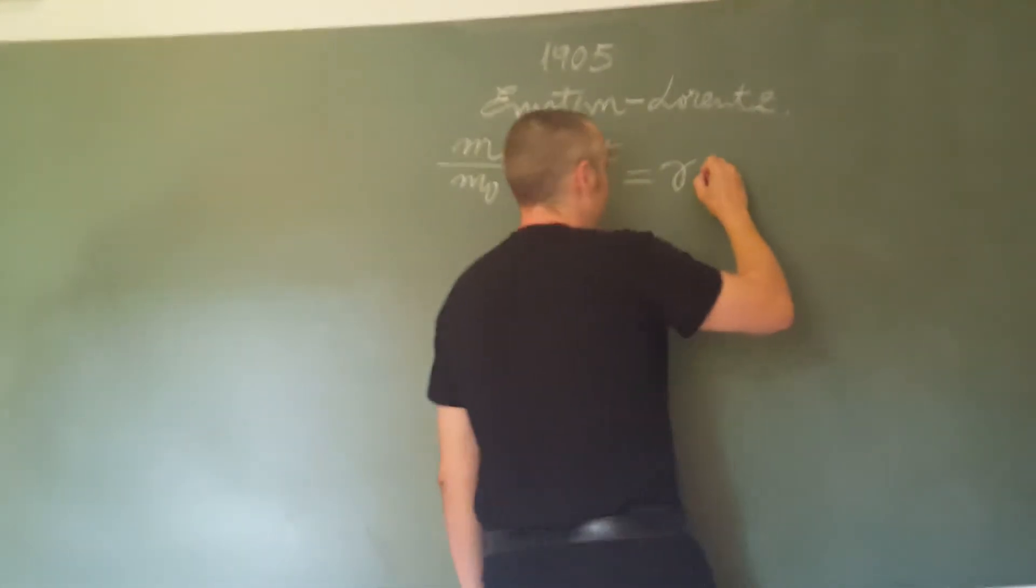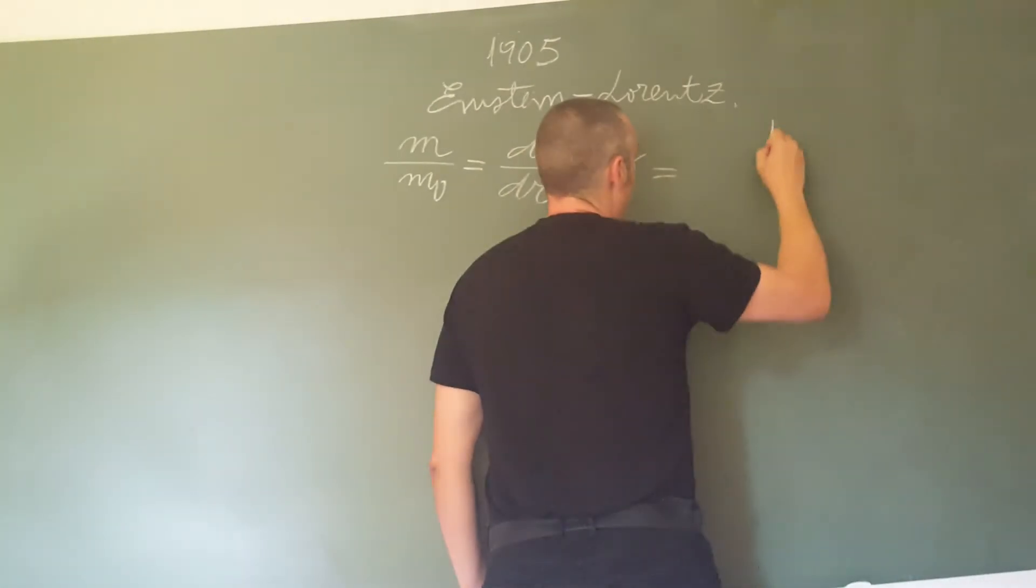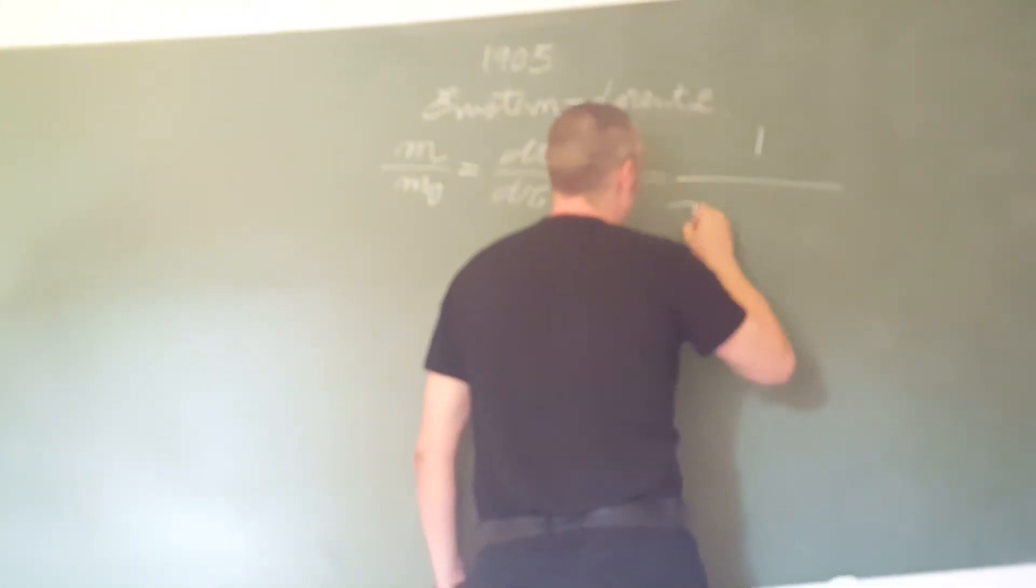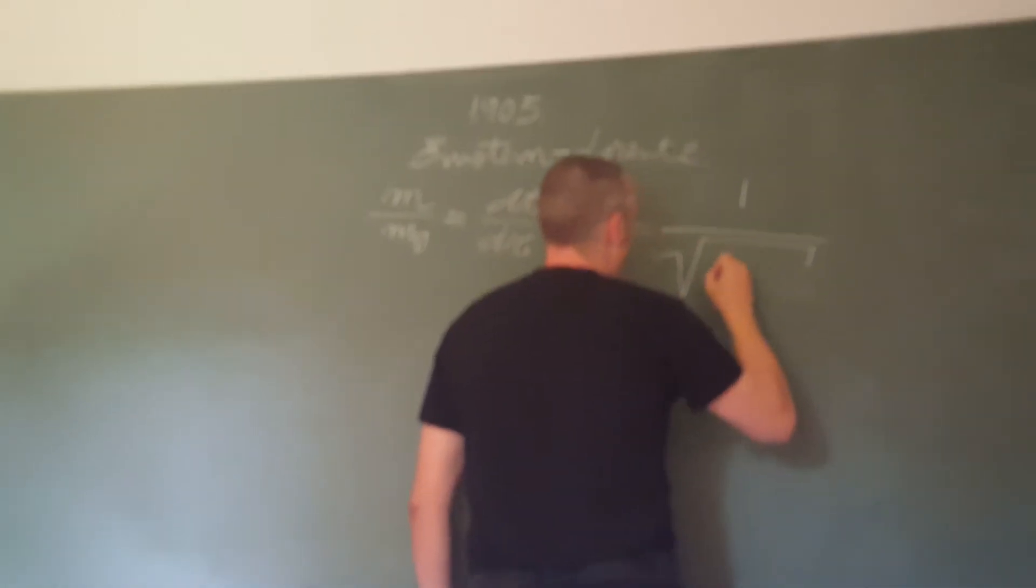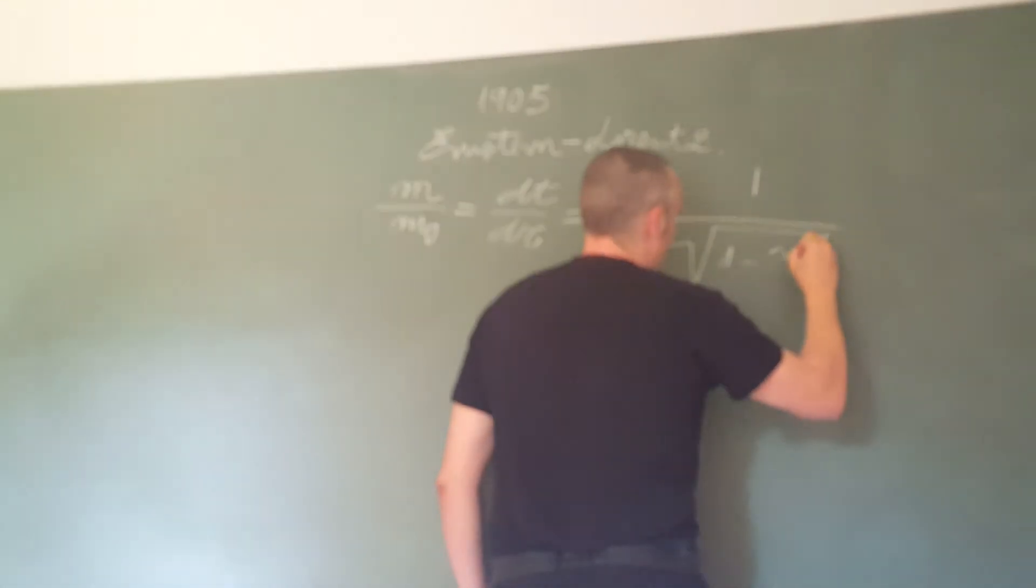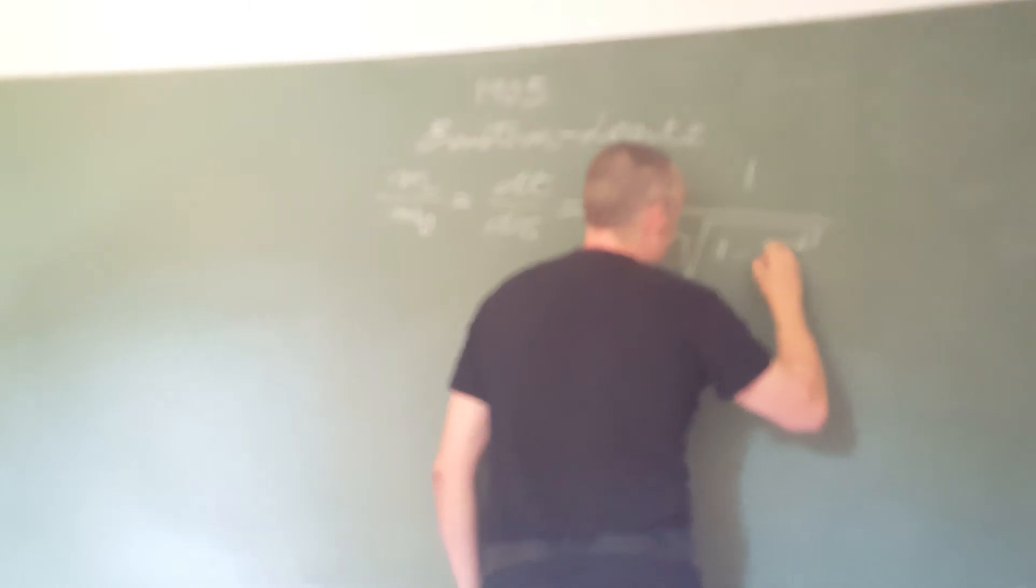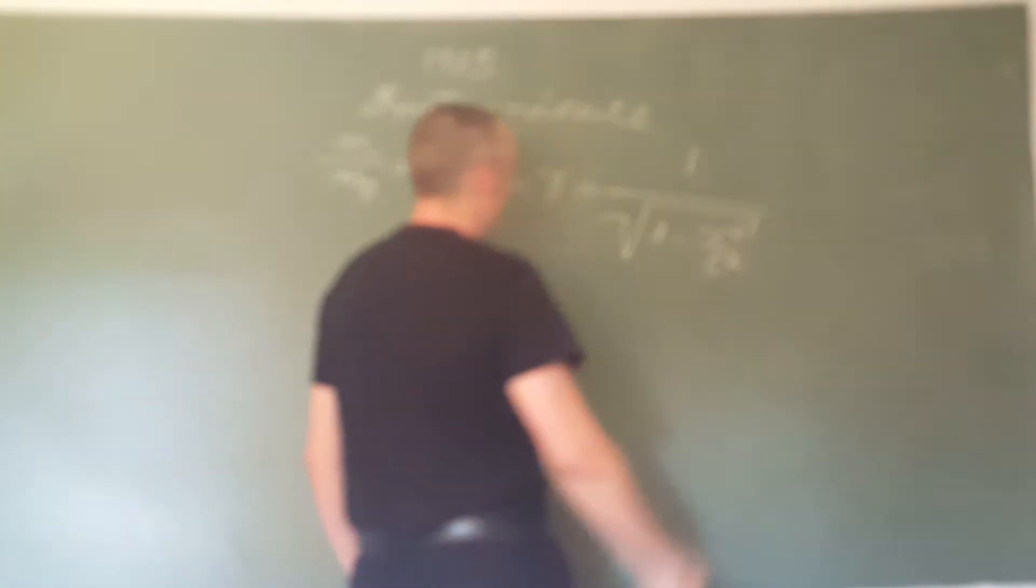The Lorentz factor is equal to 1 divided by the square root of 1 minus the speed of the observer squared divided by the speed of light squared.